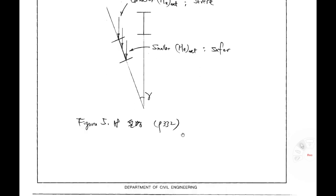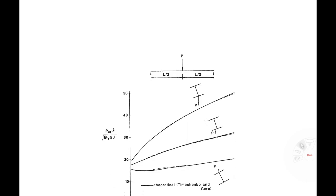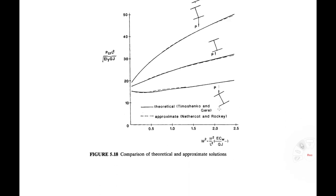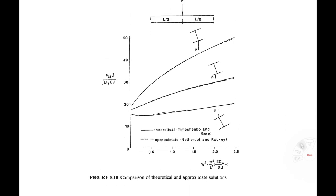Looking at figure 5.18: if P is applied at the bottom flange, M external is smaller, so PCR and MCR go up. If applied at the top, it's the severe case — you have a large external moment against the Z-axis and buckling strength decreases. At the shear center, the result is somewhere in the middle. So lateral buckling strength is related to the loading point on the cross-section. Let's finish this lecture.